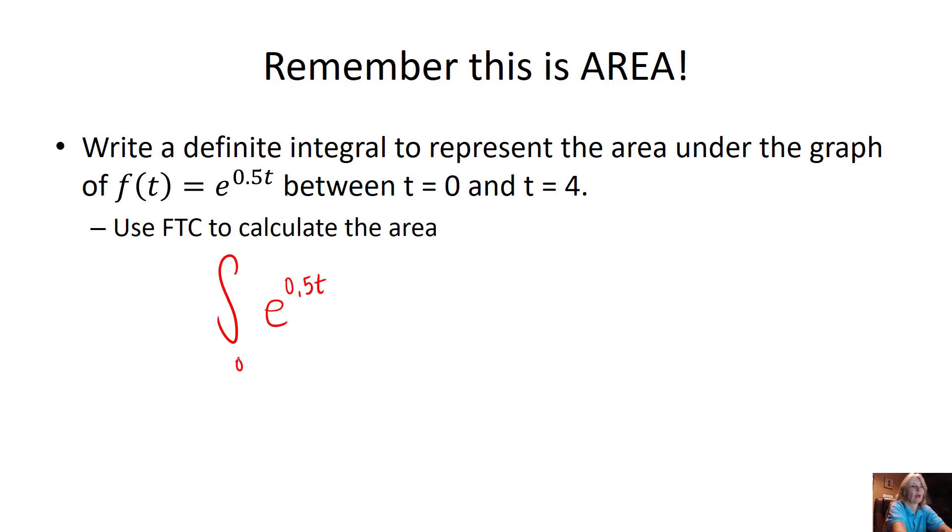And I'm going from 0 to 4, dt. That's my width. So how do you find the antiderivative of e to the kt? You do 1 over that k and you have this piece left, and we're going to evaluate this from 0 to 4. Well, 1 over 0.5 is 2, and e to the 0.5 times 4 minus 2 times e to the 0.5 times 0. So I get e to the second power minus 2 because e to the 0 is 1, and that's my final answer.